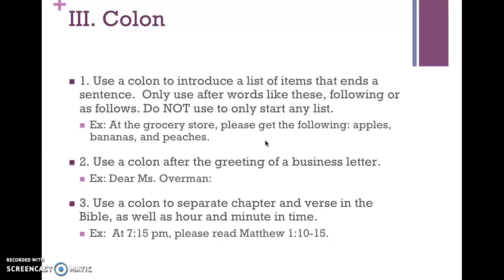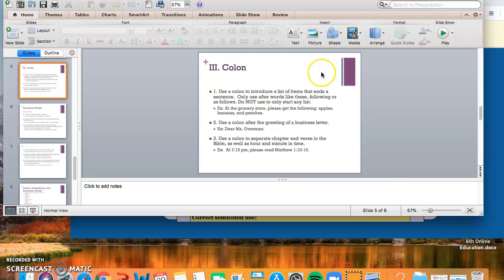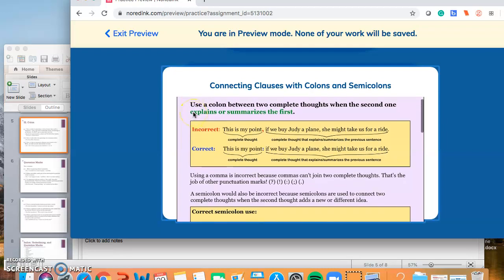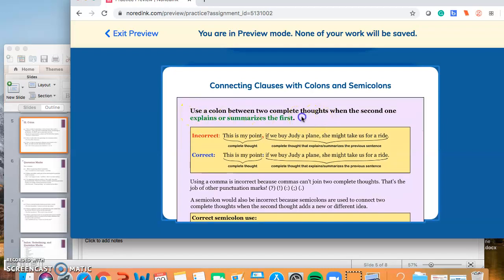Once you do the exercise it'll be really clear. Now I'm going to have you add a second rule, because these two — rules three and four — are not as crucial and you're not even tested on them in No Red Ink, but rule two you are. So hit enter after 'peaches' and add a number two. Rule number two is: use a colon between two complete thoughts — or independent clauses — when the second one explains or summarizes the first.